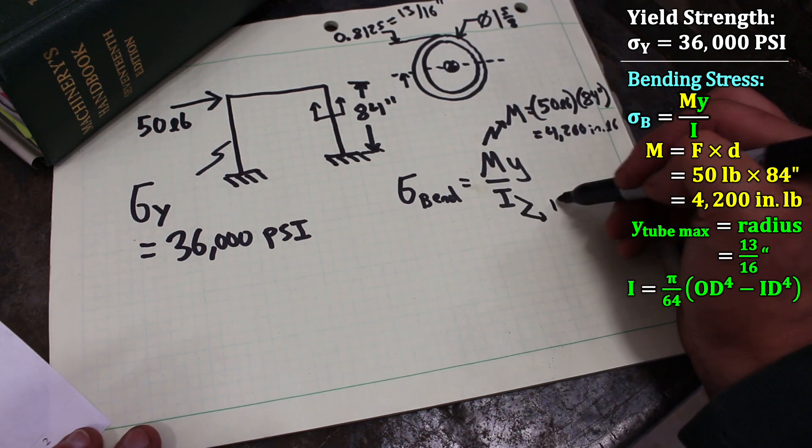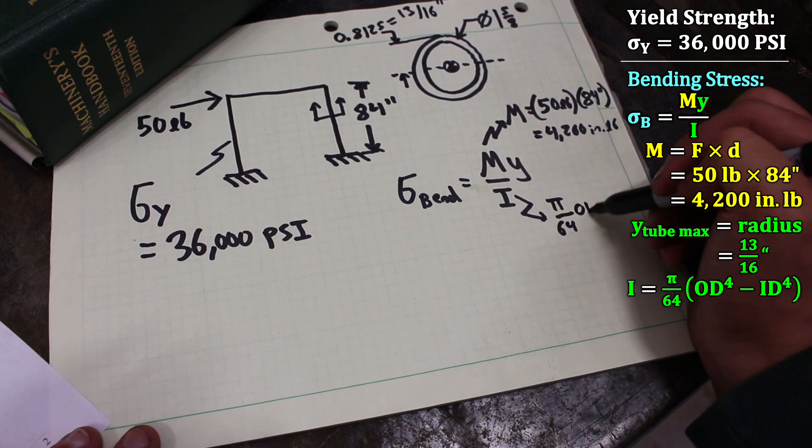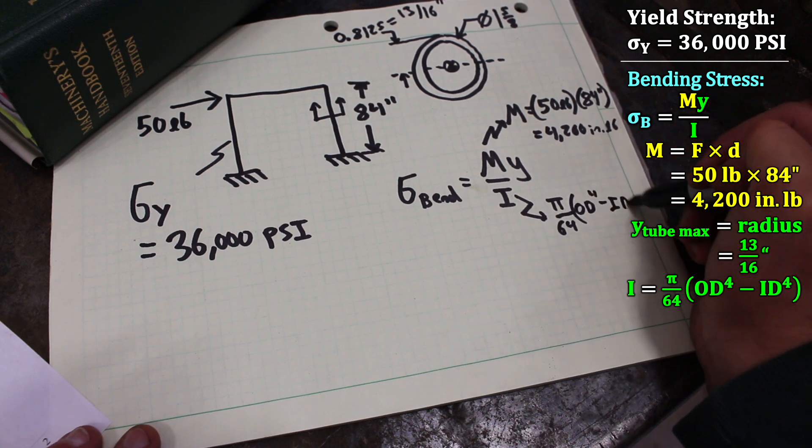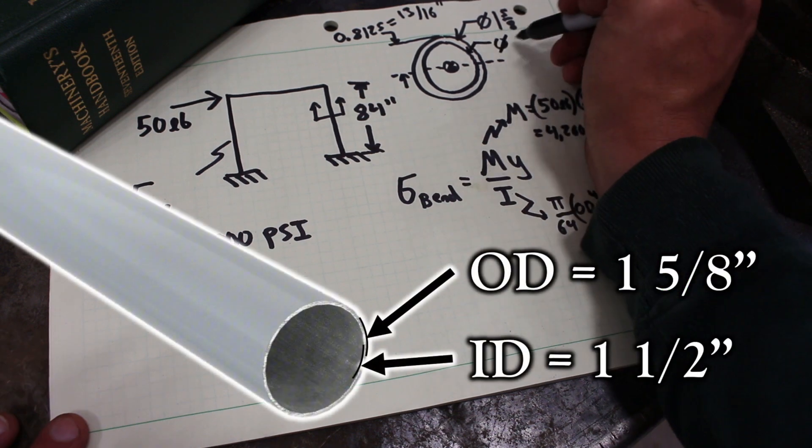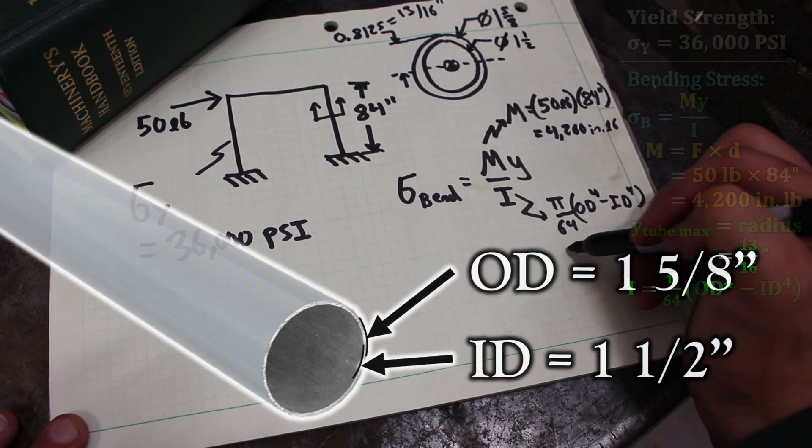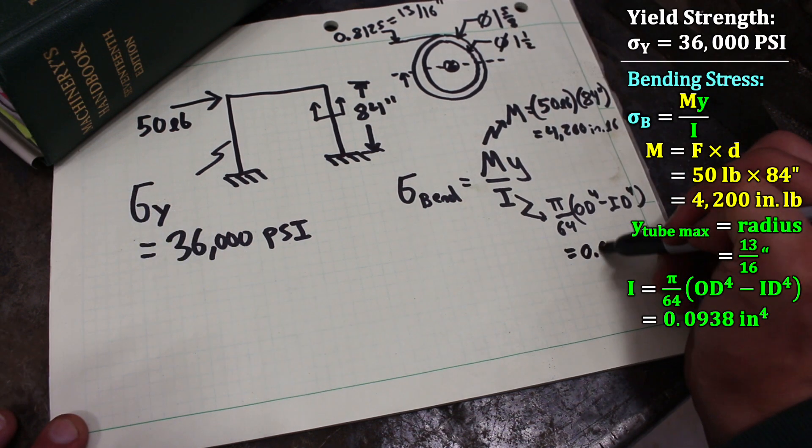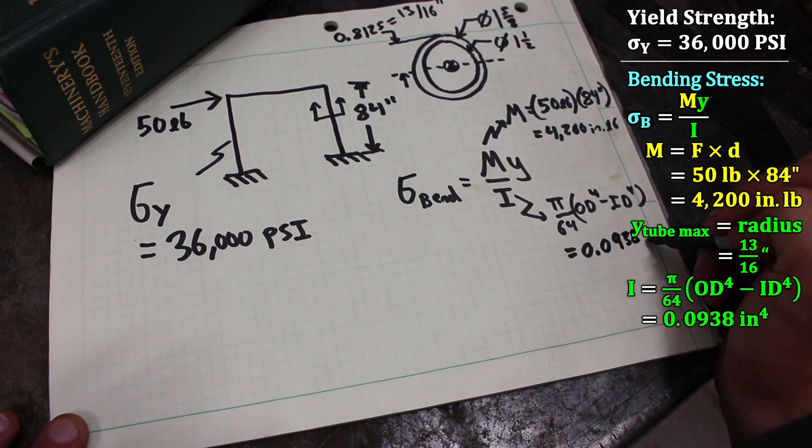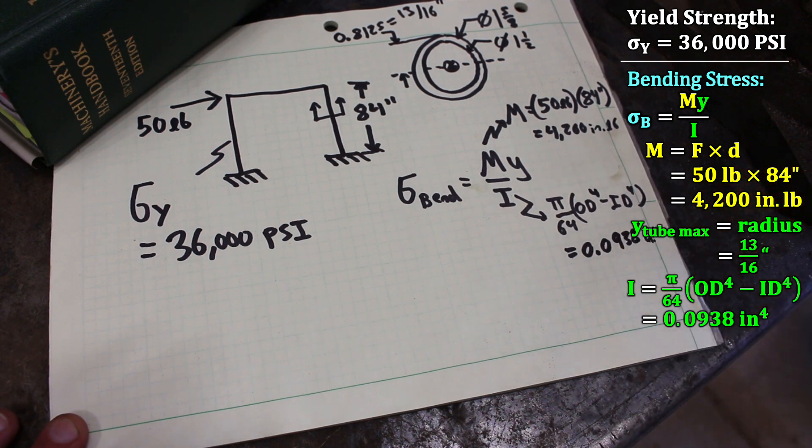And for a tube, I is π over 64 times outer diameter to the fourth minus inner diameter to the fourth. We know the inner diameter is one and a half inches, so plugging and chugging we get 0.0938 inches to the fourth.